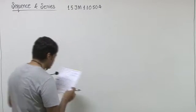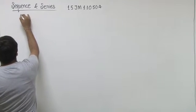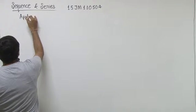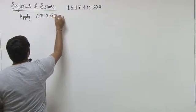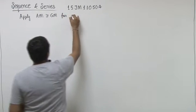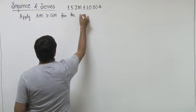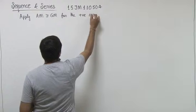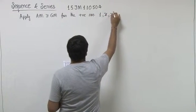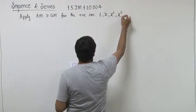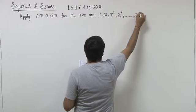Viewing this expression, let us apply the concept AM greater than GM for the positive numbers 1, x, x square, x cube, up to x to the power 200.